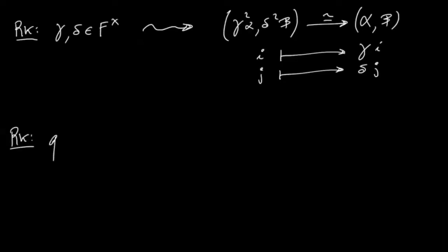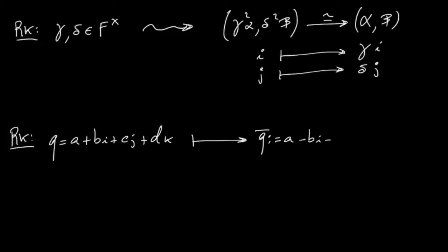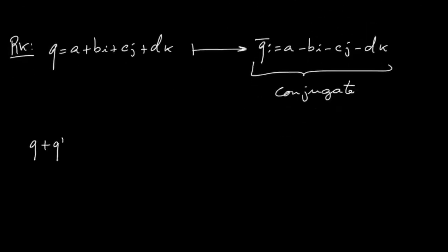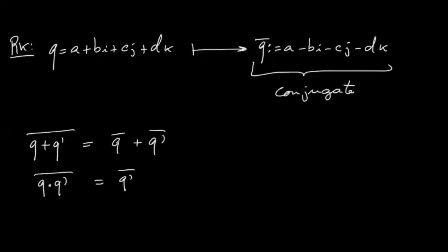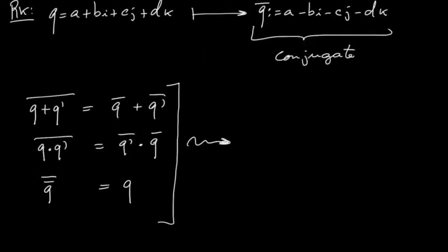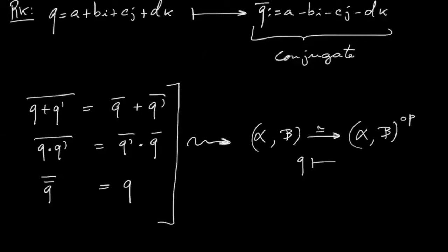Another feature of quaternion algebras — the same one we saw with quaternions — is that given a quaternion a plus bi plus cj plus dk, we can associate to it its conjugate, defined as a minus bi minus cj minus dk. The properties of conjugation are: the conjugate of a sum is the sum of the conjugates; the conjugate of a product is the product of the conjugates in reverse order; and the conjugate of the conjugate is the original quaternion itself.